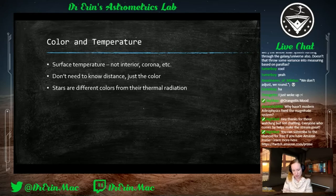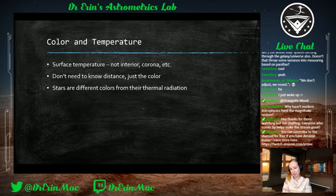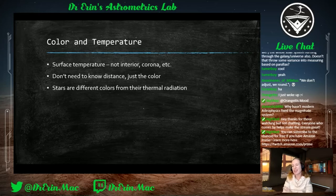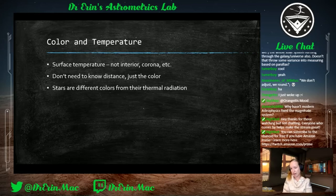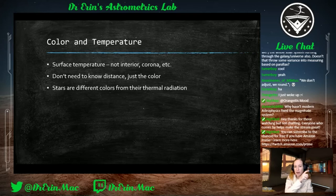Once we calculate the apparent luminosity and the distance using parallax, we can then calculate the absolute luminosity — the actual brightness of the star — using the inverse square law. So now we have actual properties of these stars. Another thing we can look at is color and temperature, and this is really straightforward.